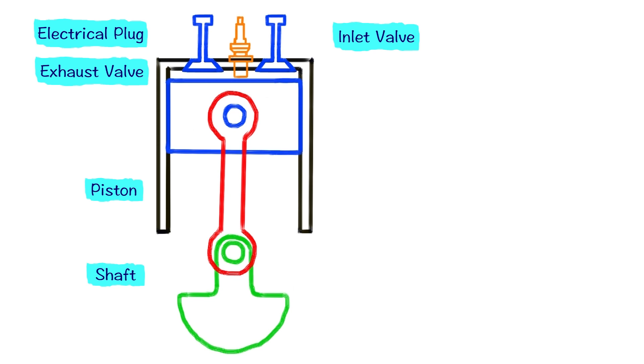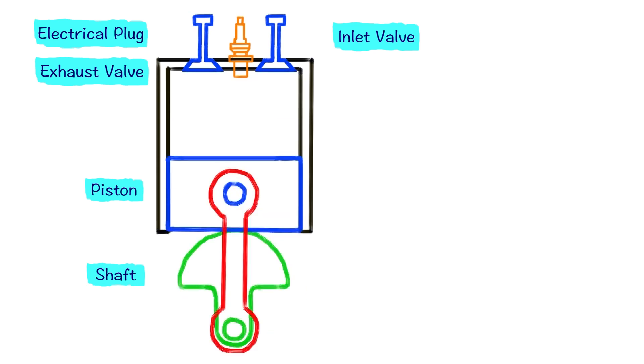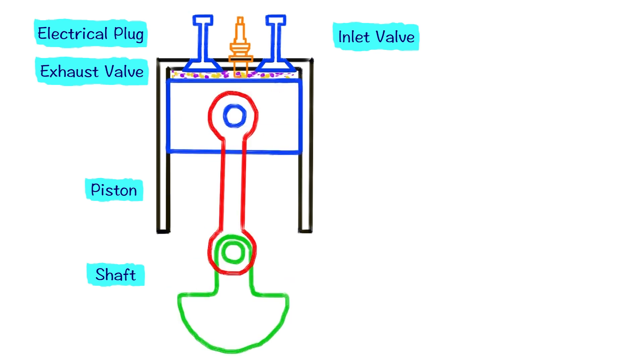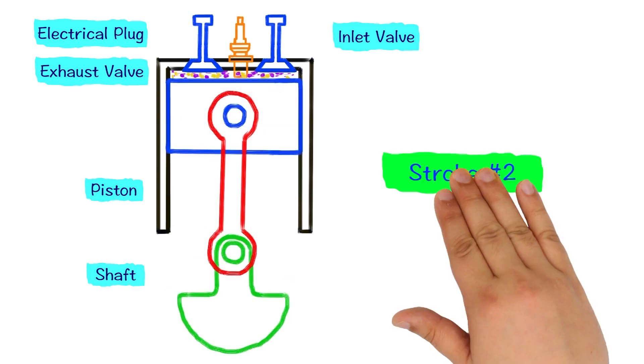I think we did it! We have just designed our first internal combustion engine. Let's review the way this engine works again. So first the piston will go down to increase the volume of the chamber. Air-fuel mixture will be injected through the inlet valve. Let's call this stroke one.